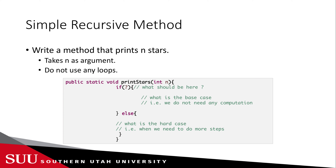Let's apply those questions to a simple example: a method that prints N stars, where N comes from the method argument, and we are not allowed to use any loops. We have an if-statement signaling the base case and an else for the case that needs computation. So what is the base case? Think of a number where I won't need to loop. If n is 1, I just print one star with no further calls — that's our base case.